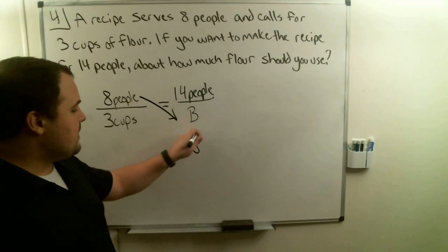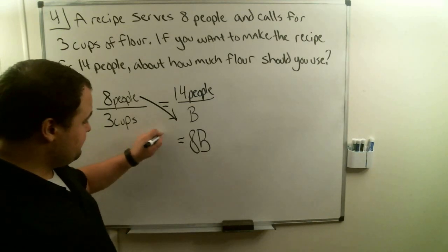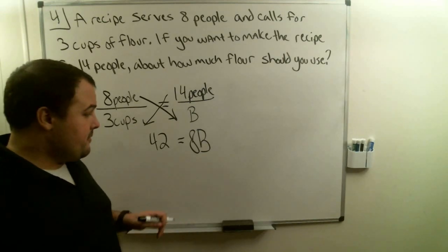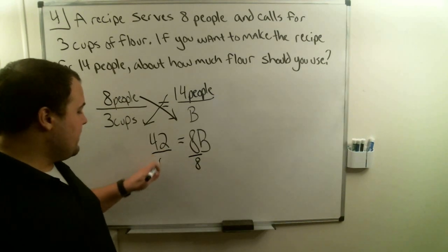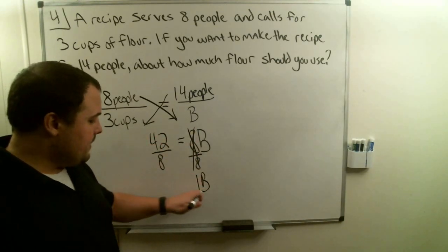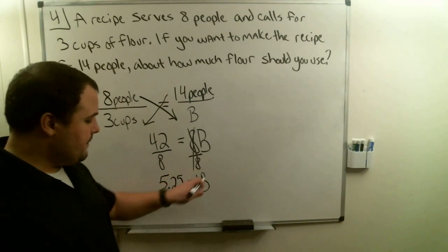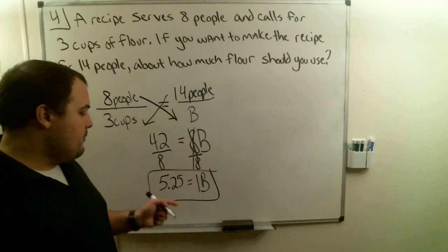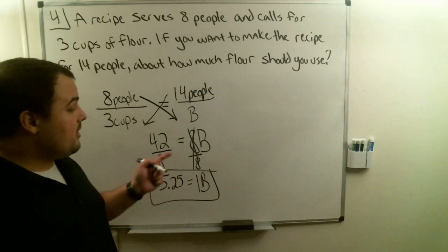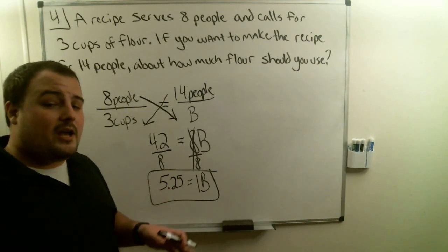8 times b is 8b. 14 times 3, that's 42. So now we know that 42 equals 8b. We want to divide by the number with the variable — 8 is with the variable — so we divide by 8 on both sides. 8 divided by 8 cancels to make 1b, equal to 42 divided by 8. My calculator gives me 5.25. So I know that if I'm serving 14 people, I want to use 5 whole cups and 0.25 — that's one fourth. So five and one-fourth cups of flour to serve 14 people and have the recipe still taste the same.